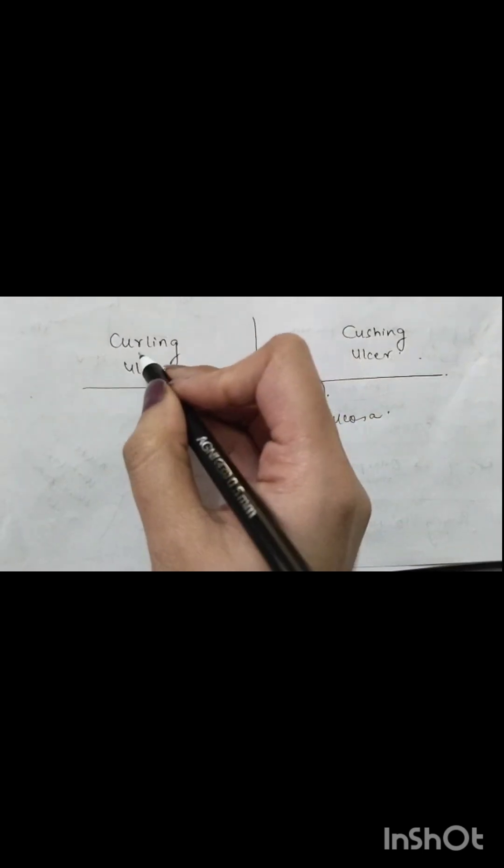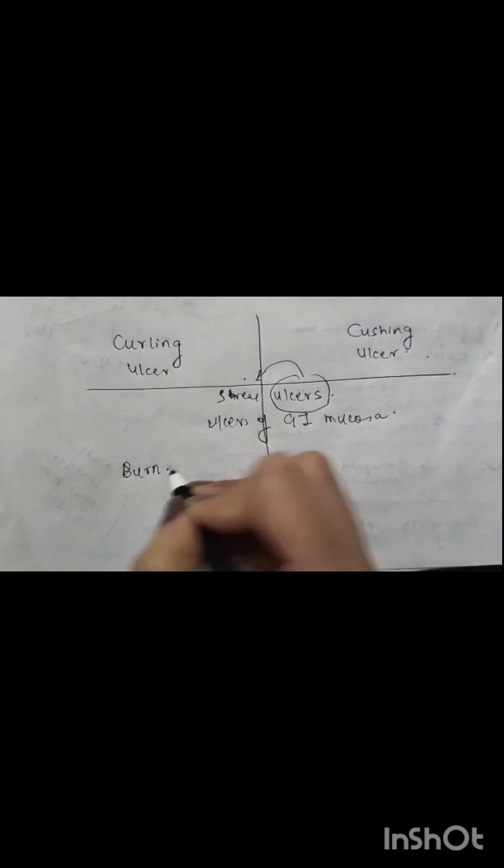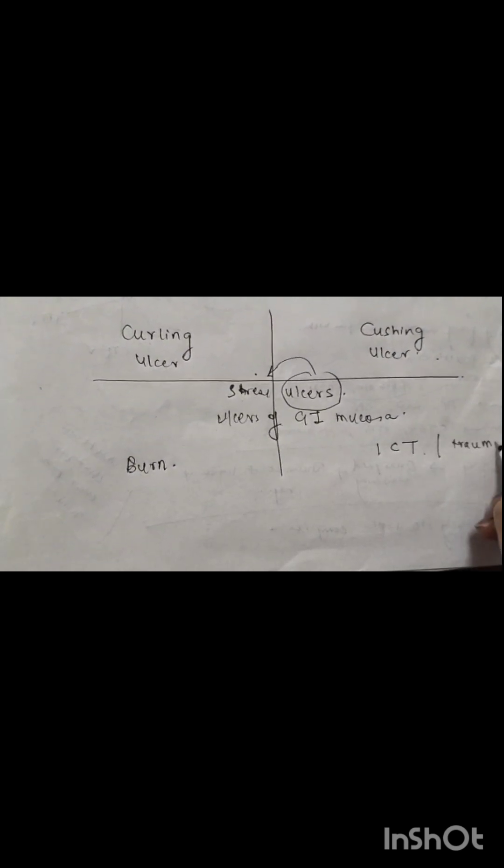The difference between curling ulcer and cushing ulcer is the cause. Curling ulcer is due to severe burns, and cushing ulcer is due to raised intracranial tension, mostly from intracranial trauma, head injury, or a tumor. If someone has a road traffic accident, cushing ulcer can develop. If someone has a severe burn, curling ulcer can develop.